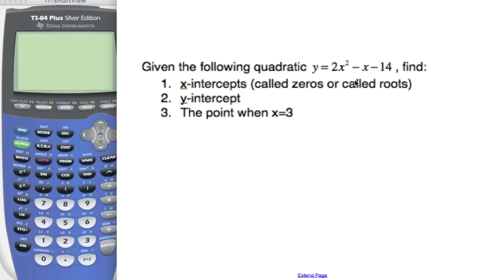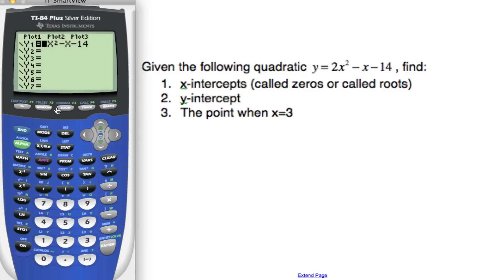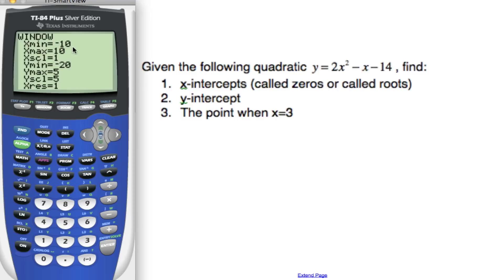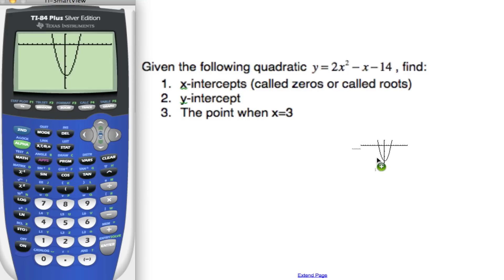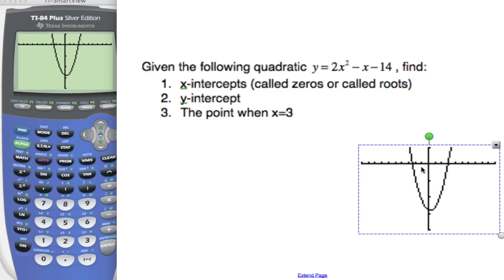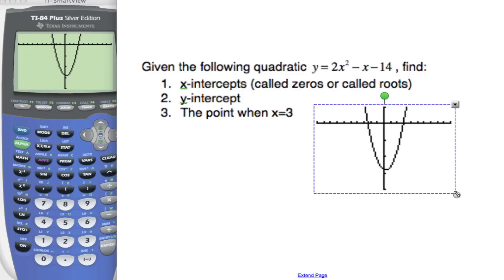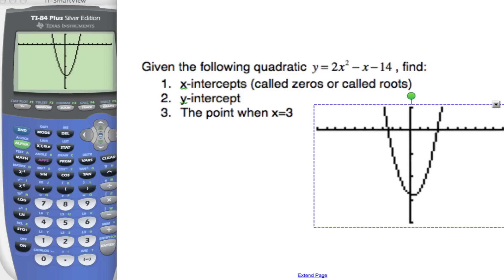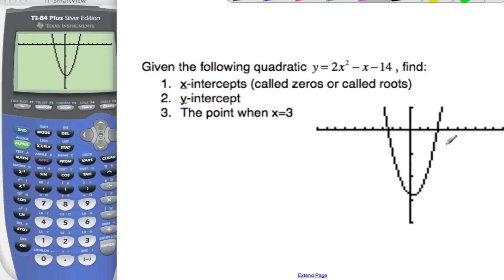Here is our quadratic — same graph, already in there. My window setting is from negative 10 to 10, and negative 20 to 5. So now if I want to find the x-intercepts and I look at my graph, I know the x-intercepts are down here. It's always a good idea to estimate in your head what you think they are. I think this one is 3, and this is about negative 2.5.